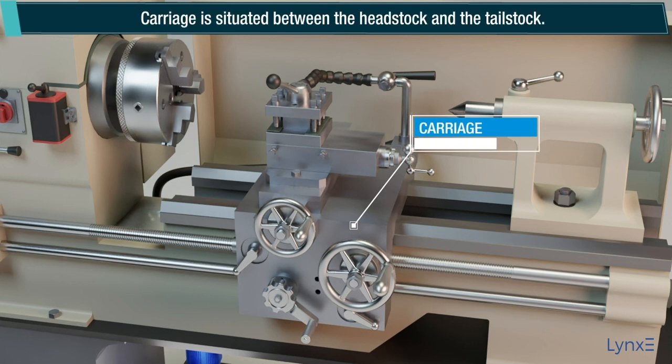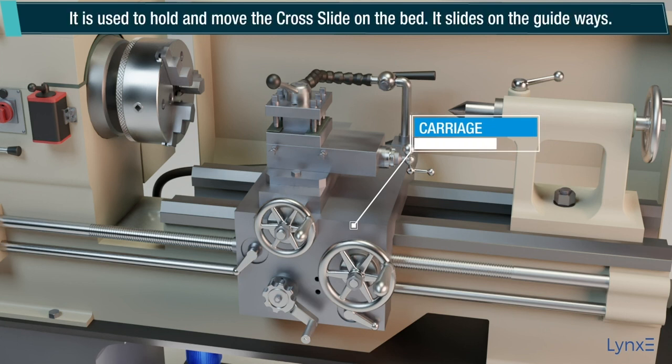Carriage: The carriage is situated between the headstock and the tailstock. It is used to hold and move the cross slide on the bed. It slides on the guideways.